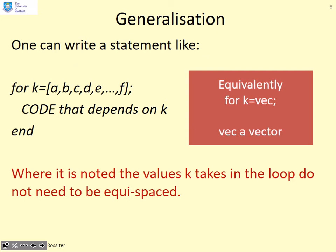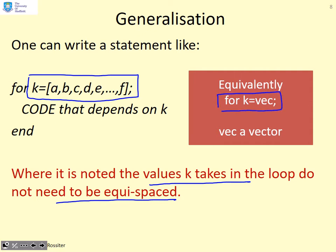In general, I can actually write the statement like this. You can see for k equals a comma b comma c comma d all the way up to some value f. The key point here is the values of k do not need to be equispaced. They can be randomly spaced. You can go one, five, three, minus six, twenty five. It doesn't really matter as long as you put them in the right syntax. The correct syntax is for k equals vec.